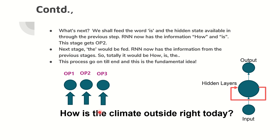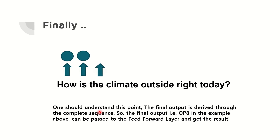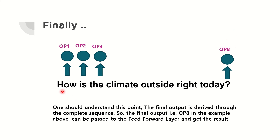The sequence keeps going until the question mark is the last input pushed into the RNN, producing output eight. The final output is derived through consideration of the complete sequence: 'how is the climate outside today.' Output eight is derived with consideration given to all the words in this sequence. This final output can then be passed to a feed-forward layer to get the result.